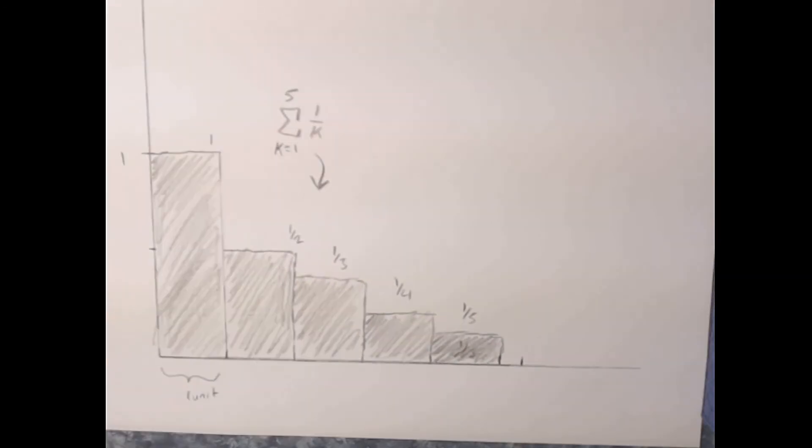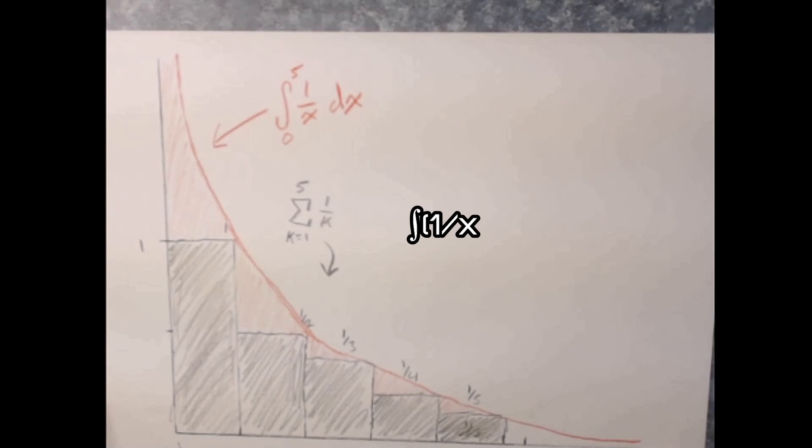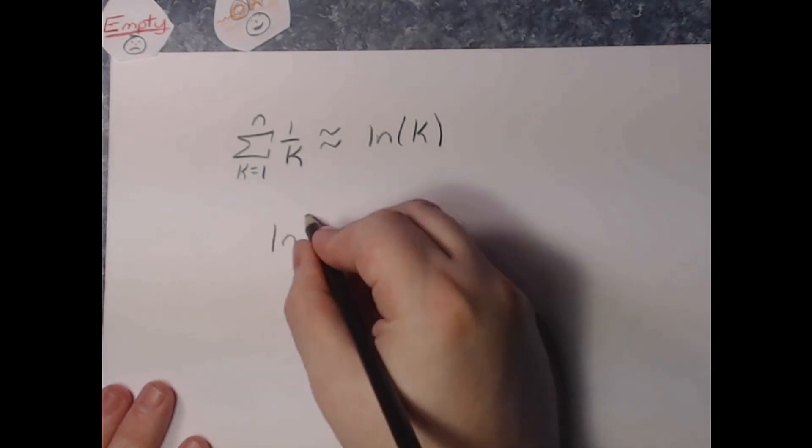The area under the curve of 1 over x is known to be the natural log of x. So asking what arguments for the natural logarithm gives us our desired distance will give us our estimation.